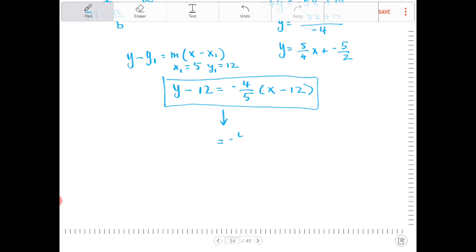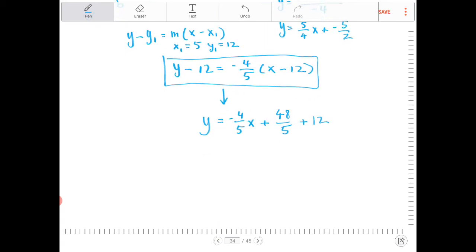So this will be negative 4 fifths x plus 48 fifths, right? And I want to add 12 to both sides. So can you see why leaving the answer in the step above is actually a much more elegant answer and simpler, right? Here we've got to combine the 48 fifths and the 12 together.